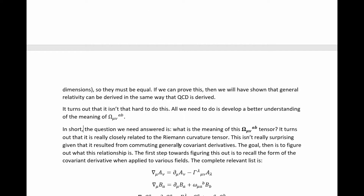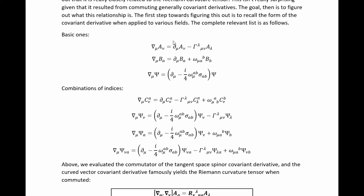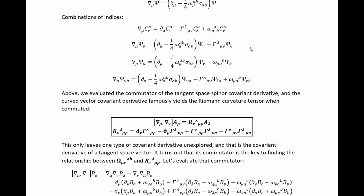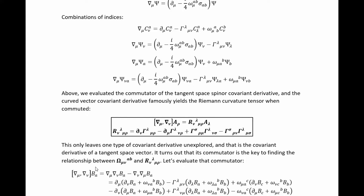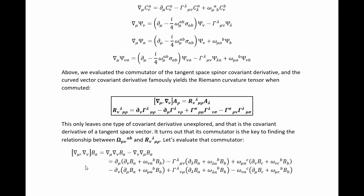This isn't really surprising given that it resulted from commuting generally covariant derivatives. The goal is to figure out what this relationship is. The first step is to recall the form of the covariant derivatives when applied to various fields. This is the complete list: fields with purely one type of index, and then combinations of different types of indices. Above we evaluated the commutator of the tangent space spinor covariant derivative, and the curved vector covariant derivative famously just yields the Riemann curvature tensor when commuted. So of the three basic types of covariant derivatives, this only leaves one type unexplored: the covariant derivative of a tangent space vector. It turns out that this commutator is the key to finding the relationship between the omega tensor and the Riemann tensor. The only reason I'm evaluating this commutator is because it's necessary to develop that deeper understanding.